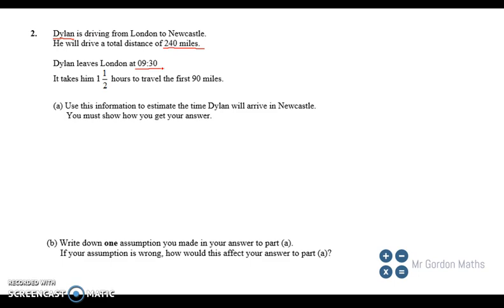It takes him one and a half hours to travel the first 90 miles. So we're talking about 1.5 hours if we want to turn that into a decimal, which might be helpful. Use the information to estimate the time that Dylan will arrive in Newcastle. You must show how you get your answer.